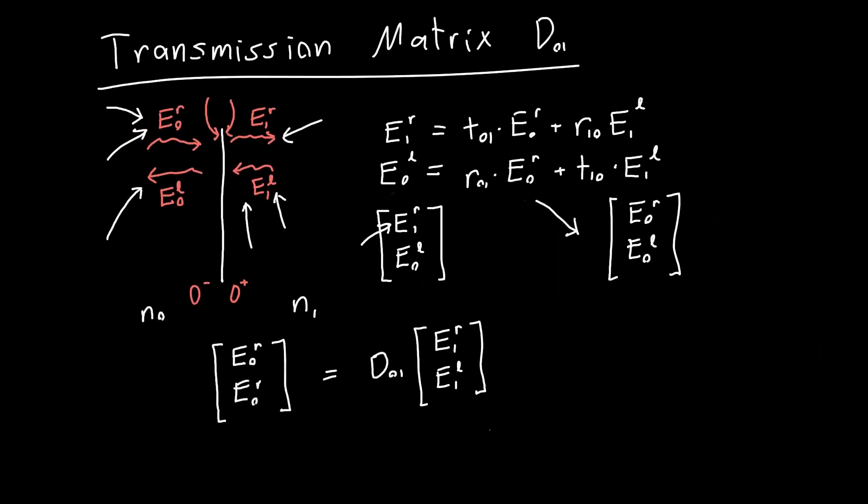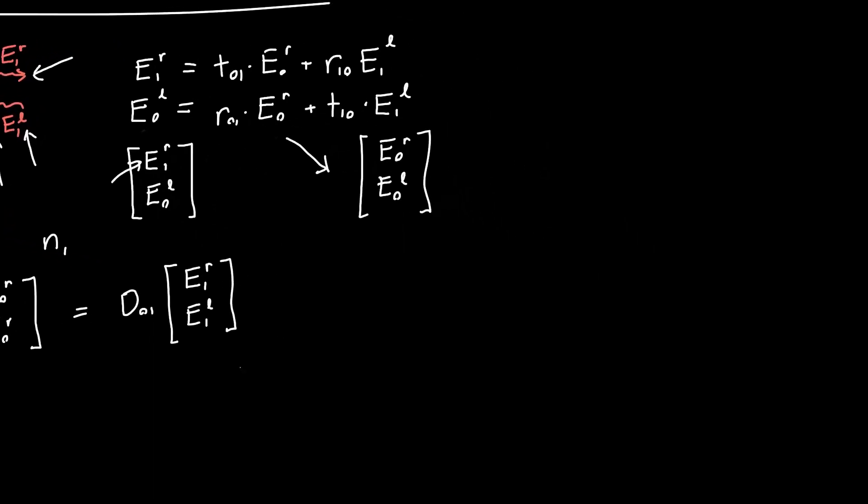do that, you'll see that the actual coefficients for the matrix can be written like 1 over T01. So just factoring out 1 over T01 times 1, R01, R01, 1. Really simple. So that is our, this is our transmission matrix.